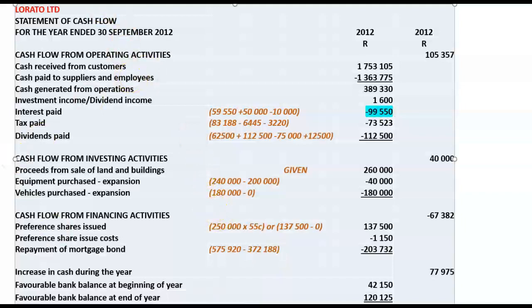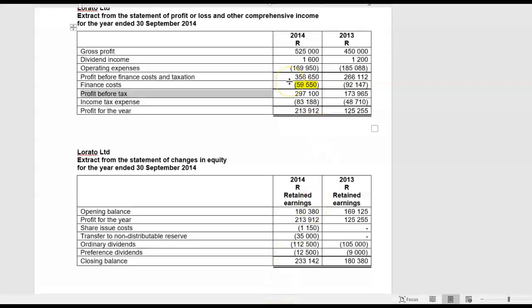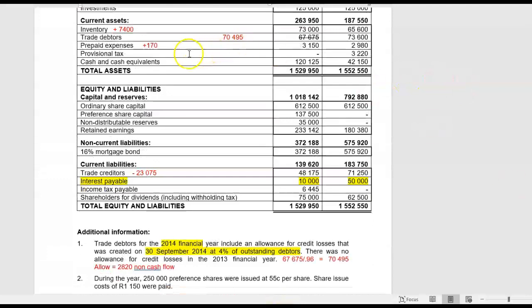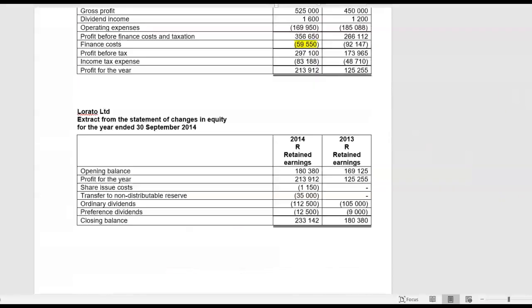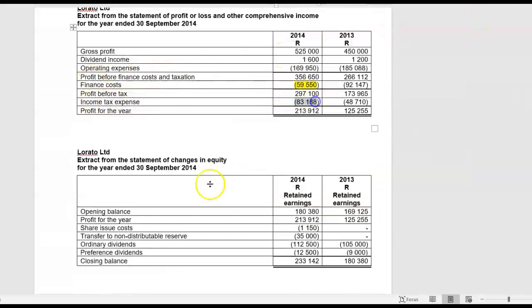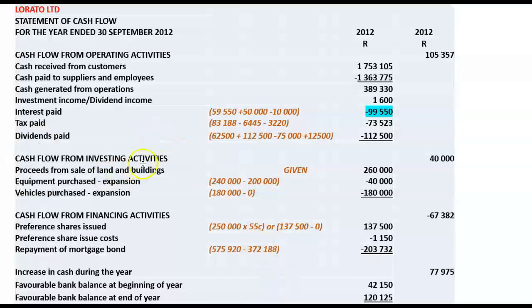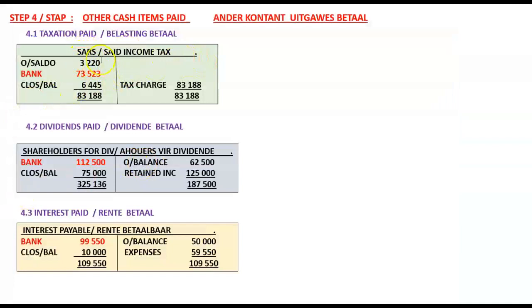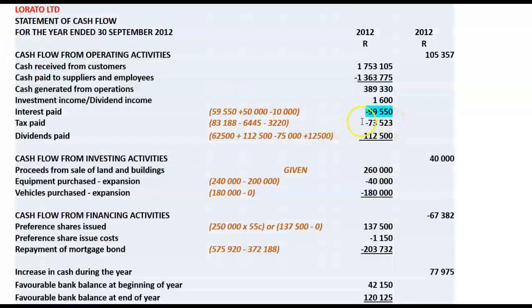So please have a look at that — don't be caught with something like that, and please understand why it is so. Our tax: we had a debit balance at the beginning of the year of 3,220. We had a credit balance at the end of the year of 6,445, and we had an income tax expense of 83,188. Opening balance debit 3,220; closing balance is a credit balance so we bring it above the line on the debit side 6,445; income tax charge for the year 83,188. We debit the expense account and credit SARS 83,188. The balancing figure equals the actual amount paid to SARS for income tax: 73,523.